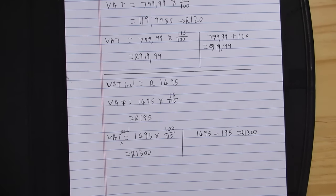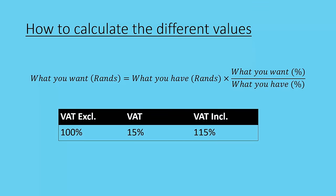Just remember: the formula is what I want in Rands equals what I have in Rands multiplied by what I want percentage-wise over what I have percentage-wise, using our little key of 100, 15, and 115.